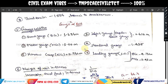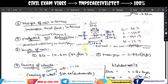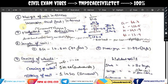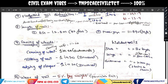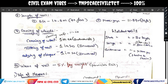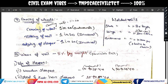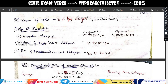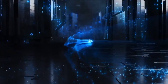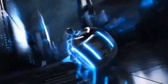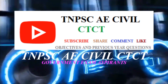In this video, we covered the total axial load, flat-footed rail dimensions, length of rails, and coning of wheels. In the next video, we will discuss sleepers. If you found this useful, please subscribe, like, and share the channel.